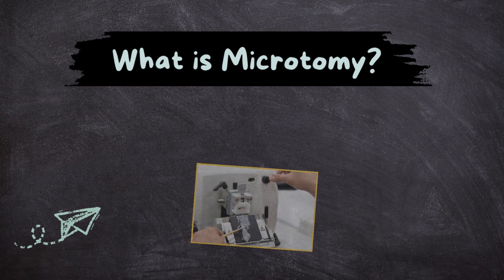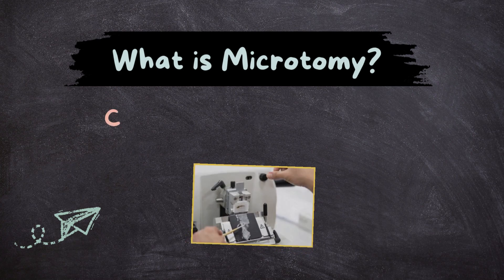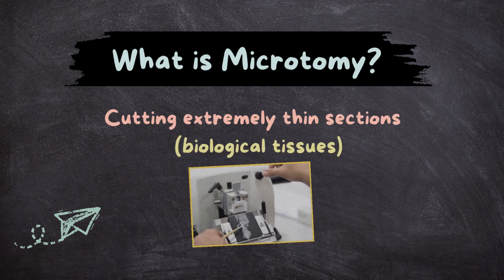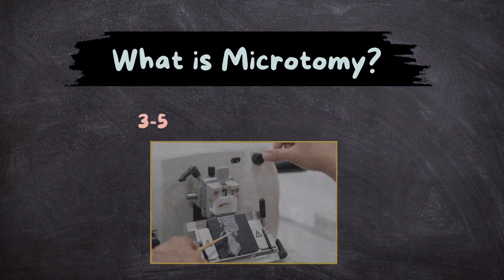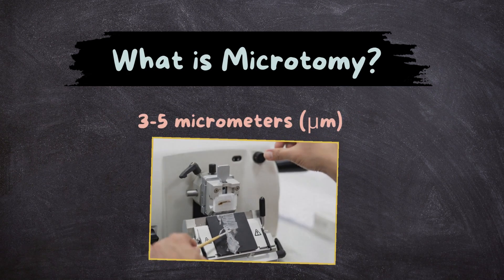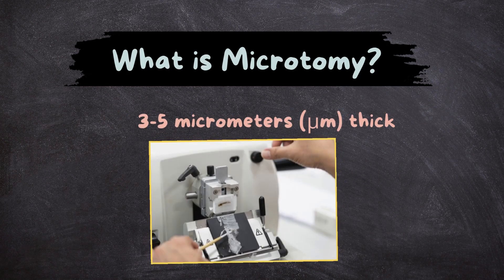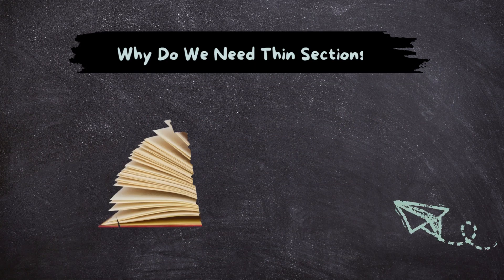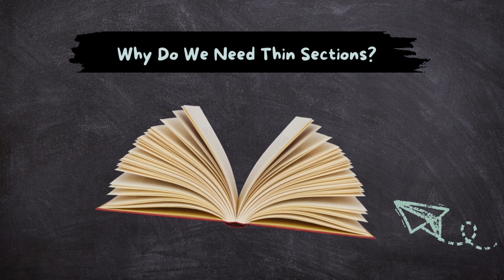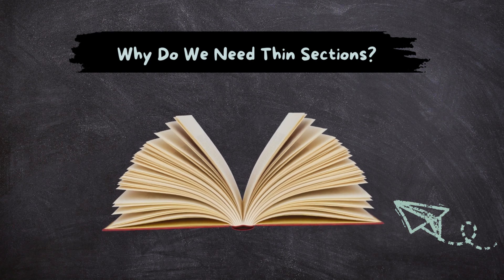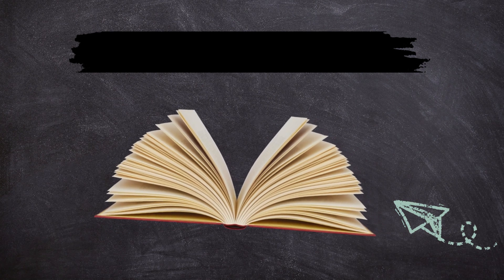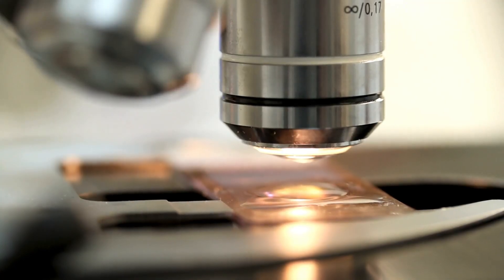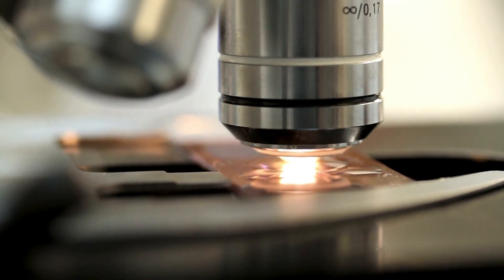What is Microtomy? Microtomy is the process of cutting extremely thin sections of biological tissues for microscopic examination. These sections are usually between 3 to 5 micrometers thick, which is thinner than a strand of hair. Why do we need thin sections? Imagine trying to read a book but each page is 10 times thicker than normal — you wouldn't be able to see the words clearly. The same happens if tissue sections are too thick under a microscope.